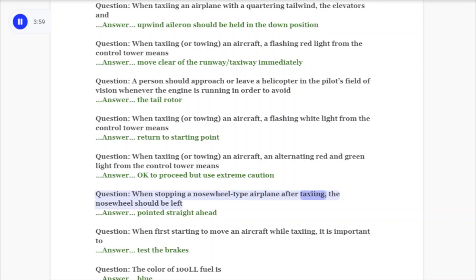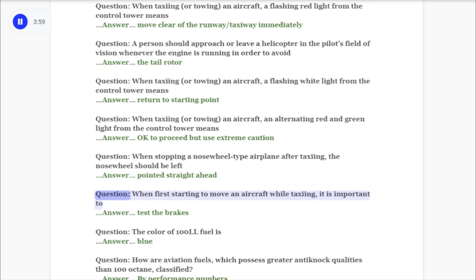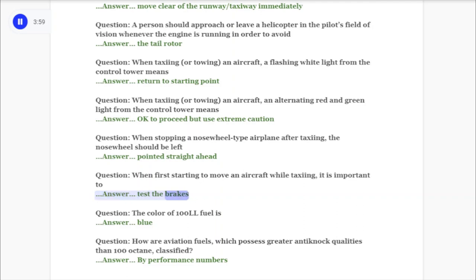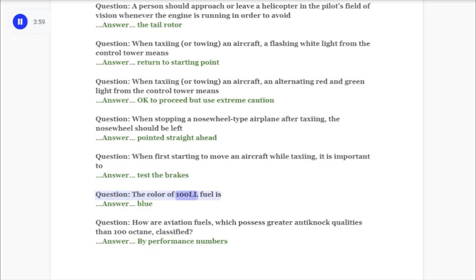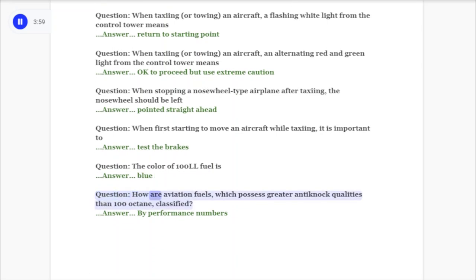Question: When stopping a nose wheel-type airplane after taxiing, the nose wheel should be left? Answer: Pointed straight ahead. Question: When first starting to move an aircraft while taxiing, it is important to? Answer: Test the brakes. Question: The color of 100LL fuel is? Answer: Blue.